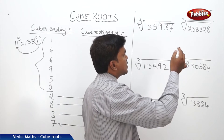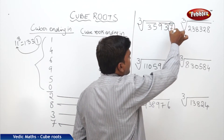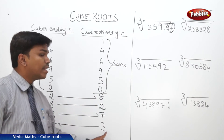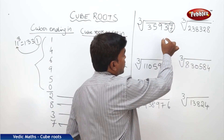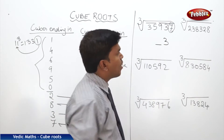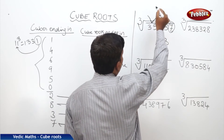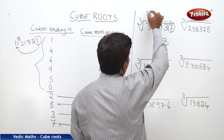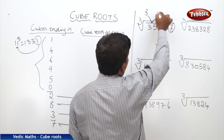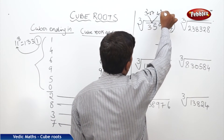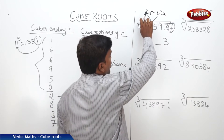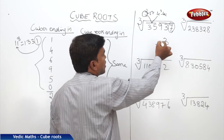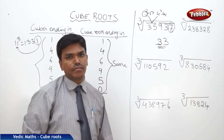The second step: check which digit the cube number ends in. It ends in 7. If a cube number ends in 7, its cube root should end in 3. So the ending digit of the answer is 3. Now come to the second partition, which is 35. The number 35 comes between 3 cubed (27) and 4 cubed (64). We always take the lesser number, which is 3. So the answer is 33.